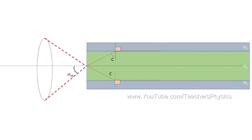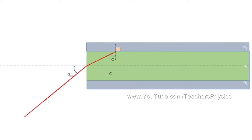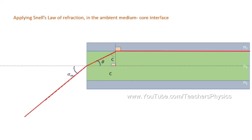The sine of the acceptance angle is called the numerical aperture of the optical fiber cable. To find how numerical aperture is related to the refractive index values of the OFC, consider light entering such that the angle of incidence at the core-medium interface is the acceptance angle, so that light is incident at the critical angle at the core-cladding interface. Let the angle of refraction at the first interface be theta. Applying Snell's law at the ambient medium-core interface: Na·sin(alpha_m) = N1·sin(theta). From the right triangle, theta plus C equals 90 degrees, giving the modified equation: Na·sin(alpha_m) = N1·cos(C) — equation 1.